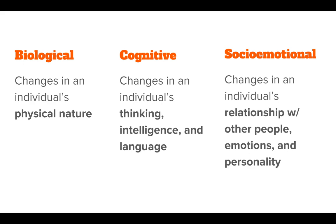Biologically, this refers to changes in a person's physical nature — height and weight, genetics, development of the brain as a physical organ, nutrition, exercise, and these kinds of things. Cognitive has to do with changes in an individual's thinking, intelligence, and language as they grow older. Language skills will develop, as well as thinking and intelligence — more symbolic thought, reasoning, and logic — but can also diminish in elder years.